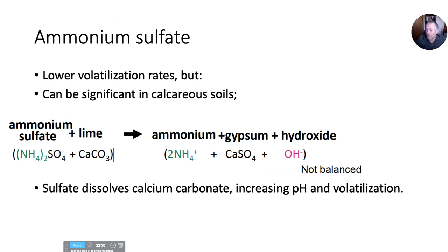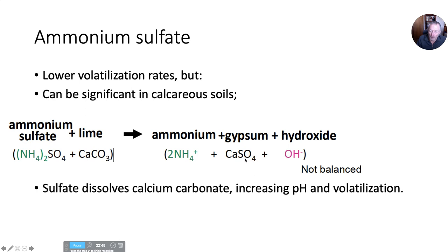Ammonium sulfate has a lower volatilization rate overall, but in calcareous soils it can be higher because the sulfate combines with calcium carbonate, freeing up that carbonate ion to generate hydroxyl and increase pH. So we end up with gypsum, ammonium, and an increase in pH.